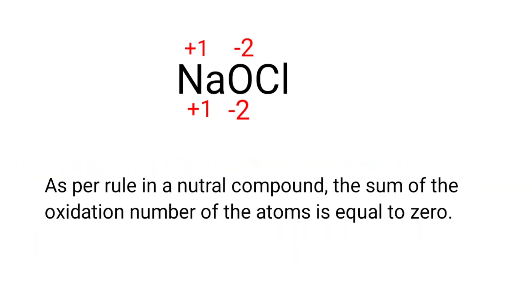As per rule in a neutral compound, the sum of the oxidation number of the atoms is equal to 0. So the numbers along the bottom must add up to 0. The number under Cl must be +1, so the oxidation number of chlorine is +1.